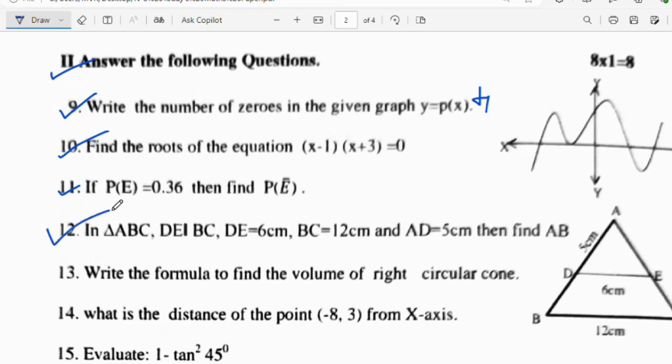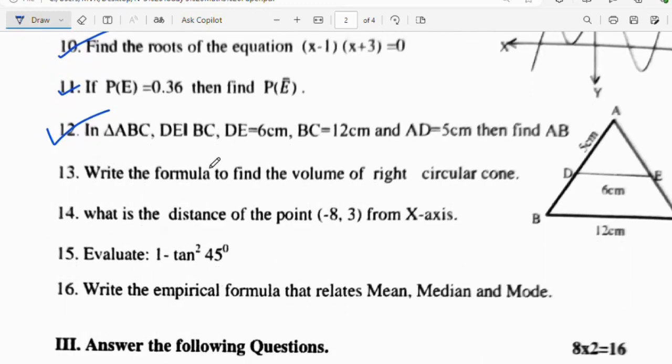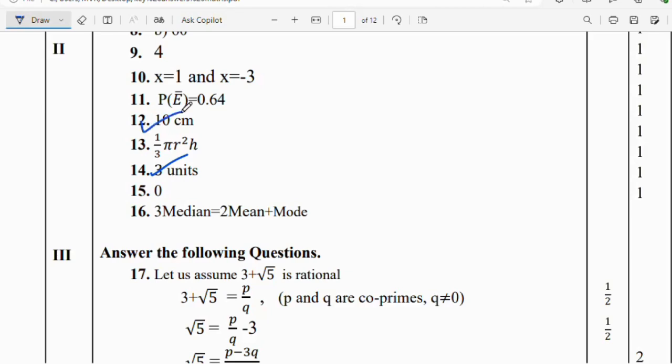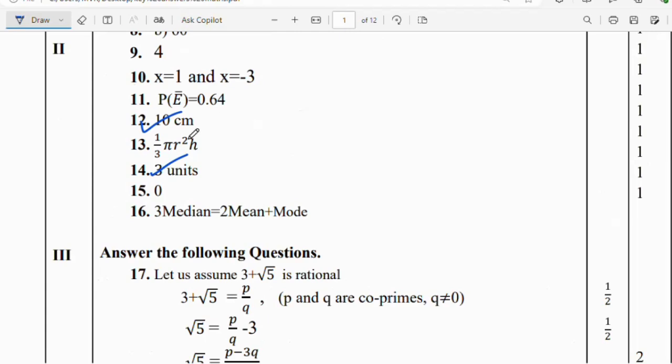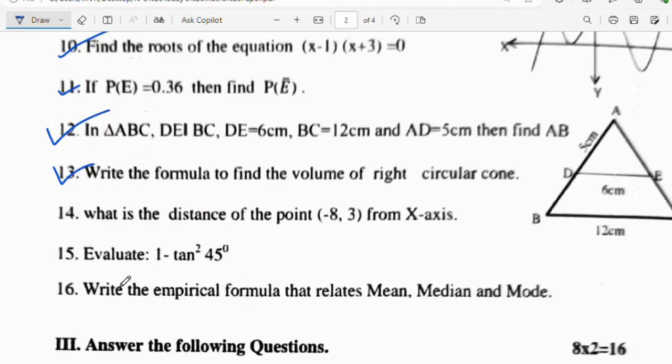Question number 12: In a triangle ABC, DE parallel to BC and DE is equal to 6 cm, BC is equal to 12 cm and AD is equal to 5 cm. Then find AB. Using Thales theorem, we will get the answer. Question number 13: Write the formula to find the volume of right circular cone. That is 1/3 into πr²h is the right answer.